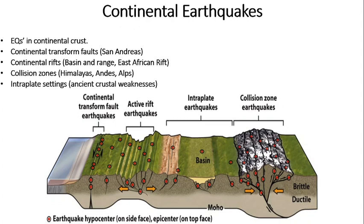Continental earthquakes are caused by continental crustal movements. The best example of transform (horizontal) movement is the San Andreas fault, shown in the left part of the diagram. Continental rifts such as the African Rift Valley are also best examples of tectonic plates moving apart from one another. Collision zones result in the formation of mountains like the Himalayas, Andes, and Alps. Weak basins where plates move in the same direction at differential speeds are also susceptible to earthquakes of different magnitudes.